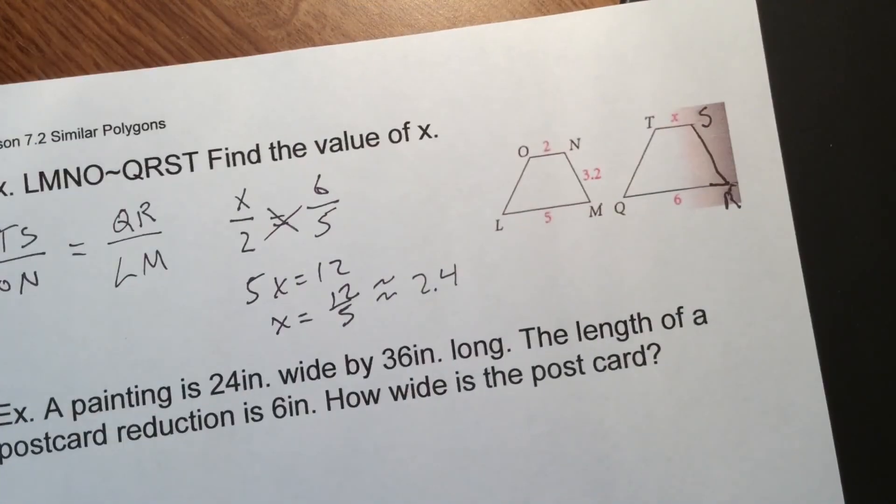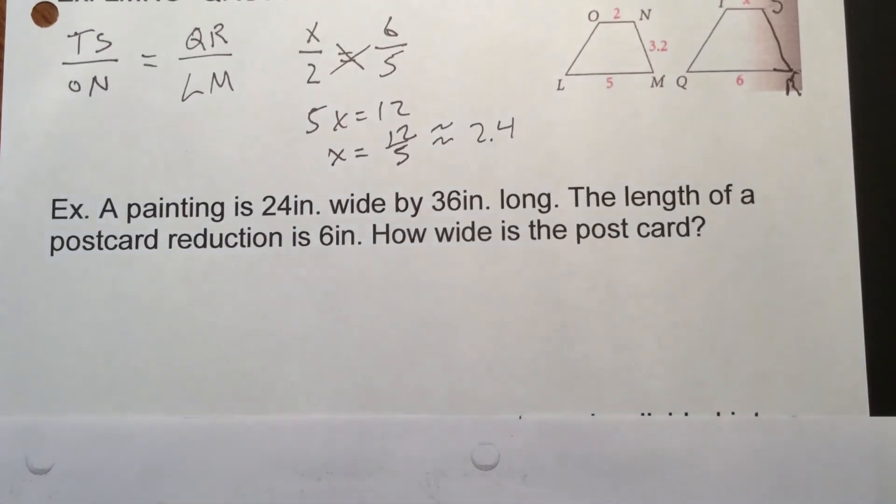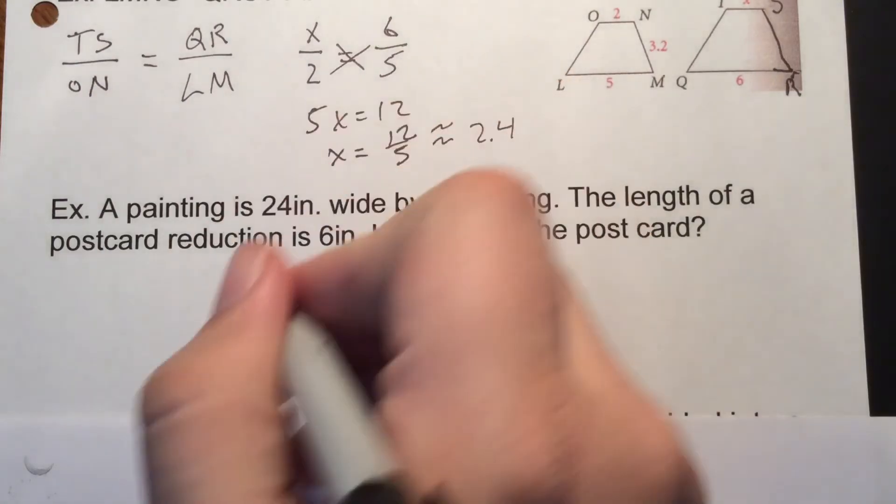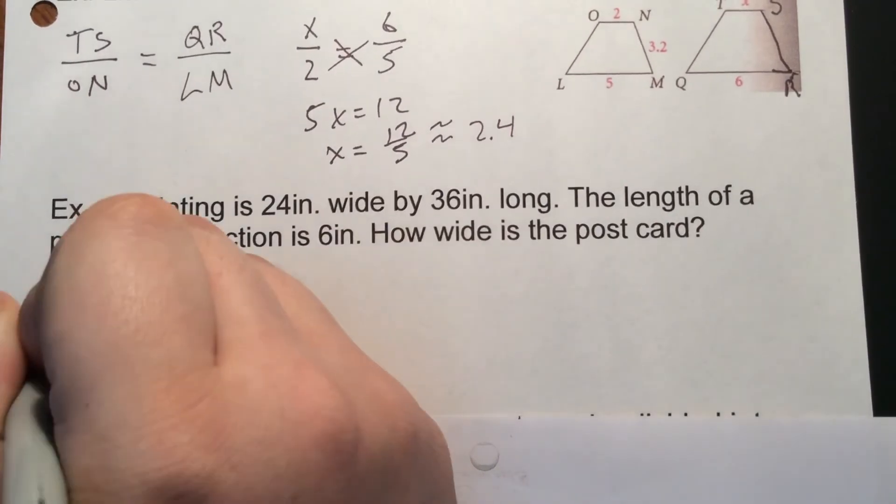All right, couple more. Use this to reduce as well. So painting is 24 inches by 36 inches long. The length of a postcard reduction is 6 inches. How wide is the postcard? So we have to make this match up. So we're going to take this painting and try to have it on a postcard that's going to be a different set of lengths and make it smaller. Now we can do this the other way. We could also go and make it bigger. But for now, we're going to make it smaller. So if we set it up, we have 24 over our 36. So width over length in this case.